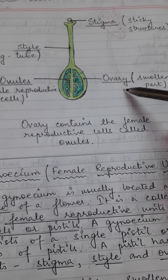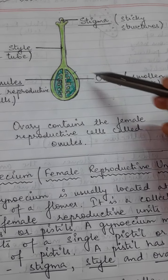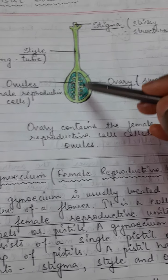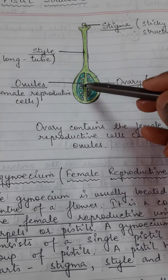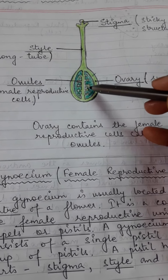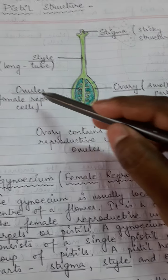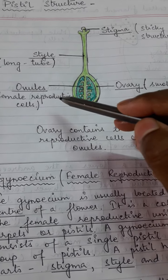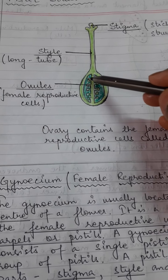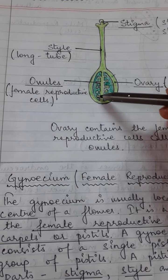Now we'll come to the third part, that is ovary. Ovary is the swollen base of the pistil. It consists of ovules — can you see these parts? These are all ovules. The ovules contain eggs or female gametes. Can you see these small round parts? These are all eggs, also known as female gametes.